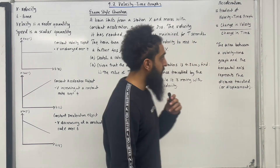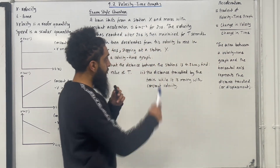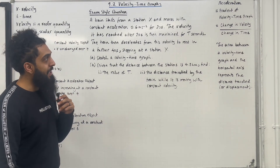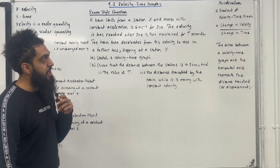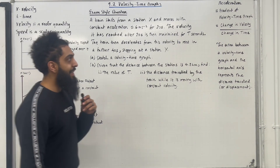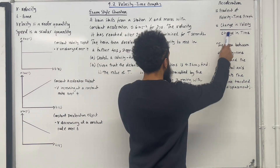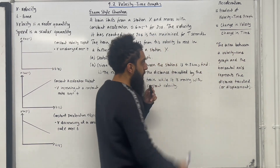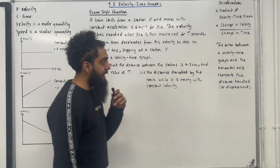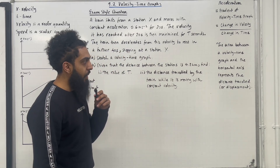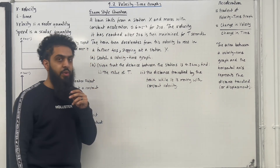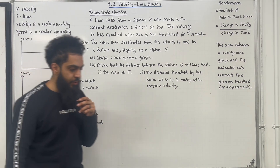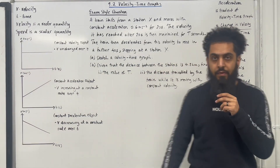We have some more important facts. The acceleration from a velocity-time graph is basically the gradient of the velocity-time graph. It is given by change in velocity over change in time. The area between the velocity-time graph and the horizontal axis represents the distance travelled, or displacement. These are the key facts of 9.2 velocity-time graphs.